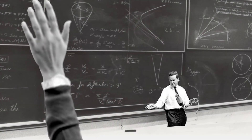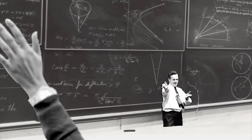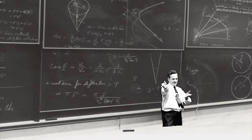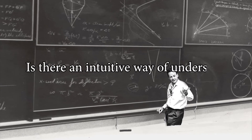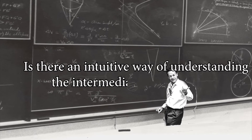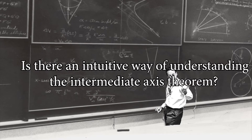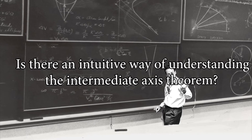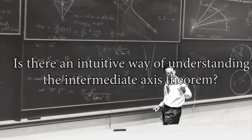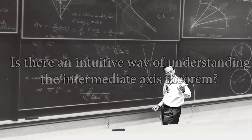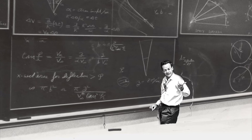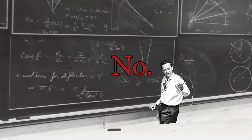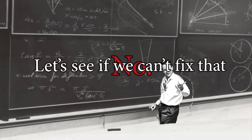There's this story in physics about how one of Richard Feynman's students once asked him, is there an intuitive way of understanding the intermediate axis theorem? As the story goes, Feynman paused for a moment, thought about it, and said no. Let's see if we can't fix that.